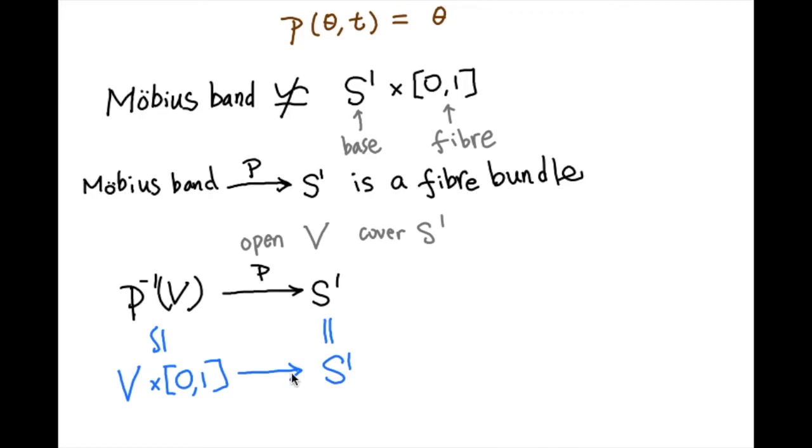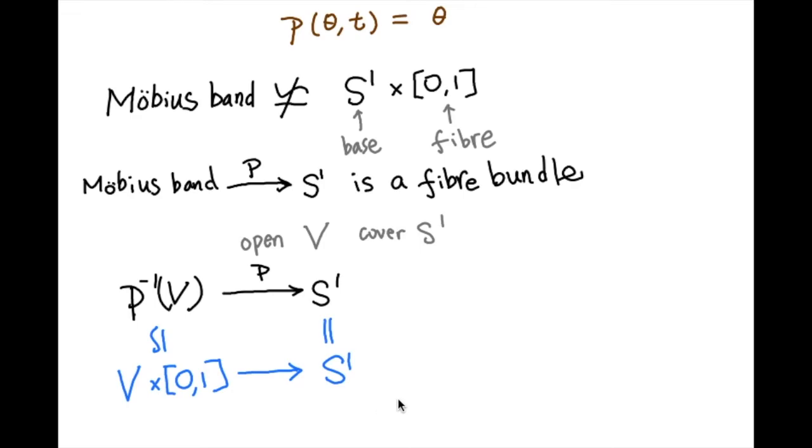And the restriction of the projection P on the preimage of V is basically the projection of the product space onto its first coordinate. Then we can say that the projection P from Möbius band to S¹ is a fiber bundle.